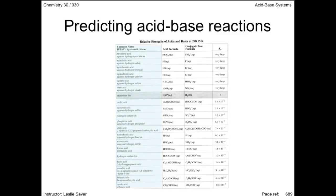The first column has the common name for the acid, followed by the IUPAC name. If you come across an acid in this course that you're required to know, it's on this table. The second column shows the acid's formula. The third column shows the formula of the acid's conjugate base — that is, the formula of the acid after it has donated its proton.